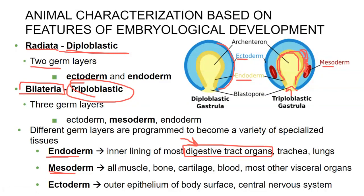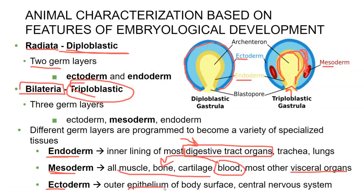Mesoderm — meso meaning the middle. This is going to be all of your muscle, bone and cartilage, even blood, which makes sense because blood is formed inside of your bone. This also includes your visceral organs other than your digestive system and lungs, so your liver and other things. Lastly, we have ectoderm — ecto meaning outside. This is going to be your epithelium, the outer epithelium, so your skin and anything on your body's surface that's not part of your digestive tract. Interestingly, this also forms your nervous system — your brain and your spinal cord.